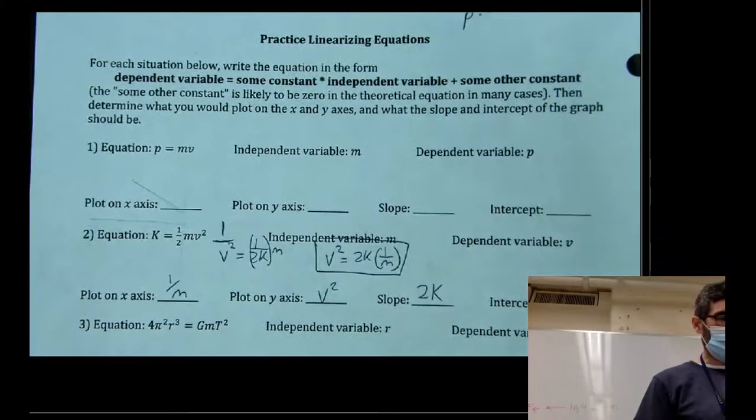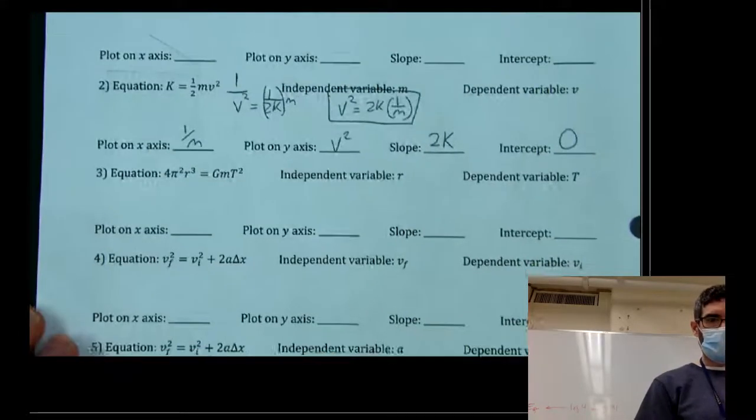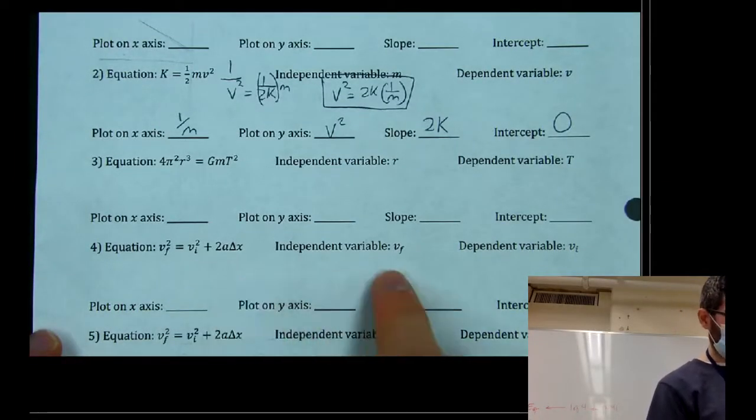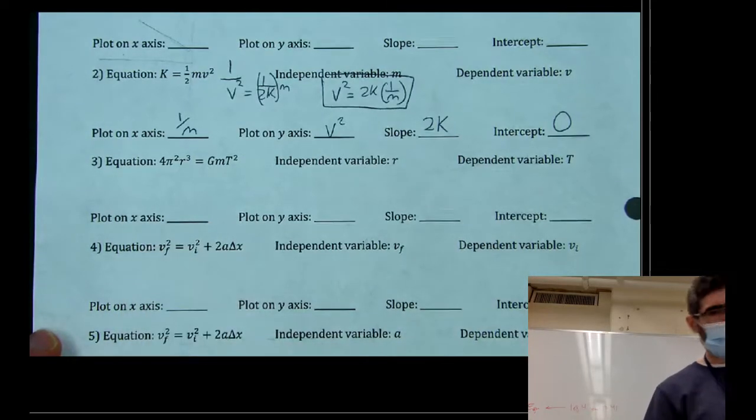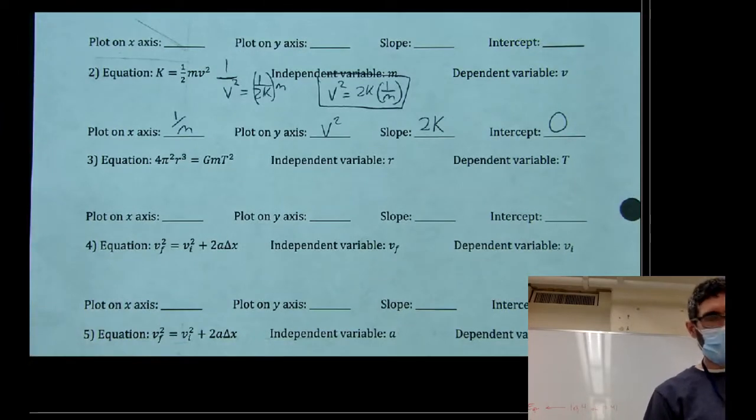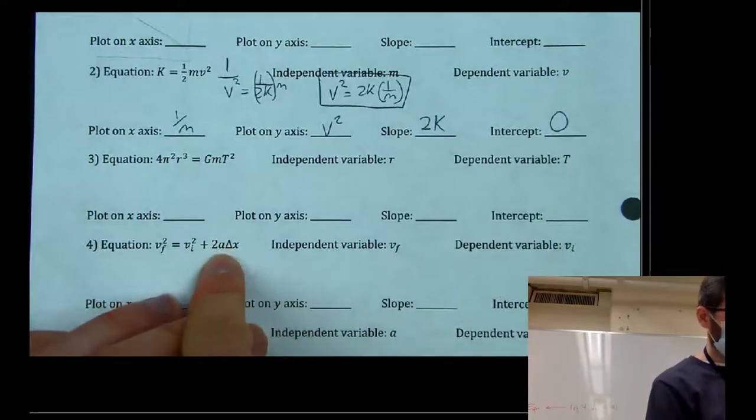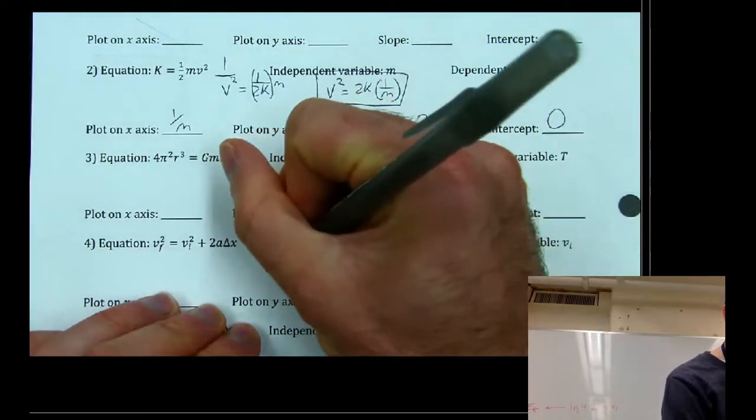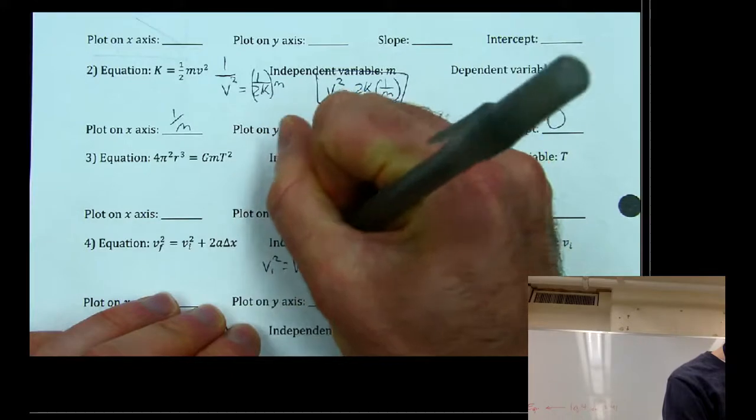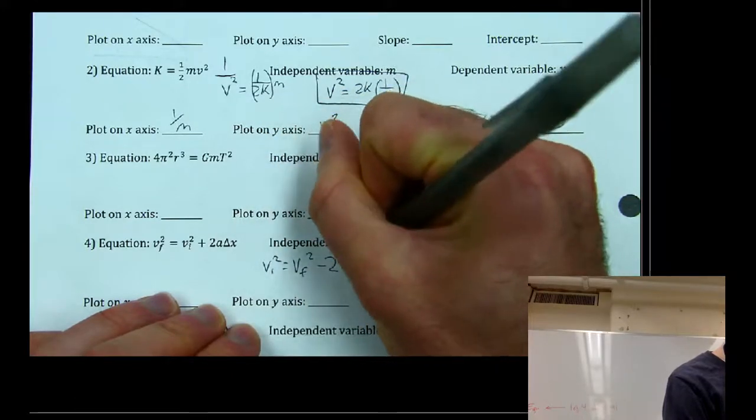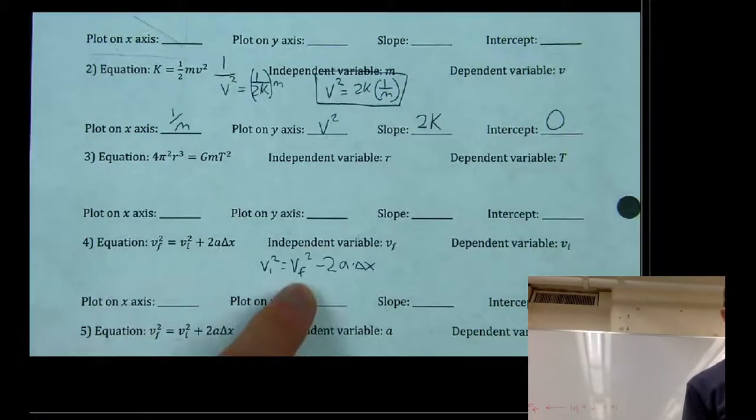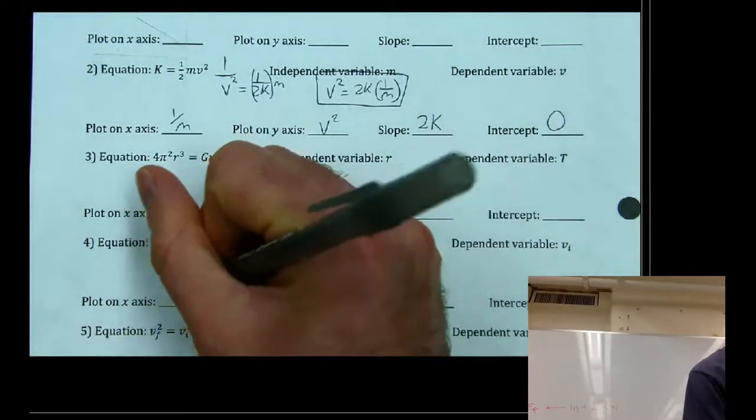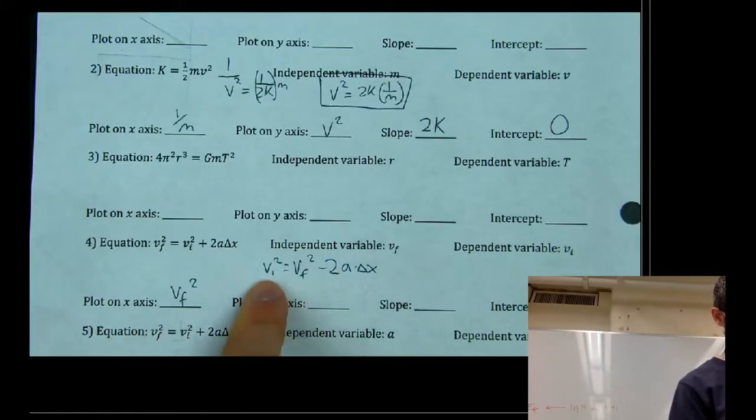One other example we could do in number 4. This equation is actually almost there. They want our independent variable to be VF and our dependent variable to be VI. Since those don't have any coefficients and they're on opposite sides of the equation, we could actually kind of leave those alone. The only thing we'll change is we'll move this added term to the side with the independent variable. So we'll rewrite it like this, VI squared equals VF squared minus 2 times A times delta X. So then what we have is our independent variable upon the X axis, VF squared. Our dependent variable, which we'll plot on the Y axis, VI squared.